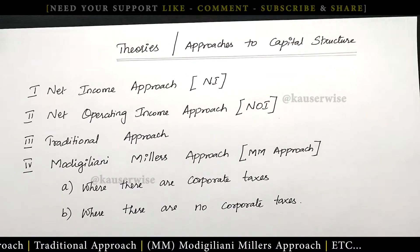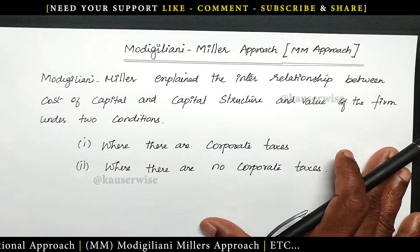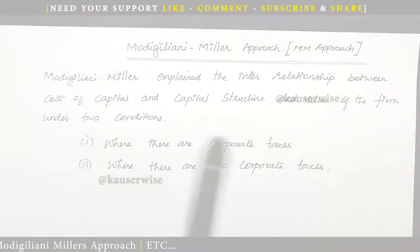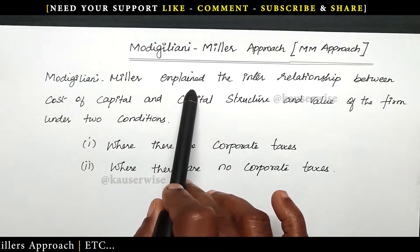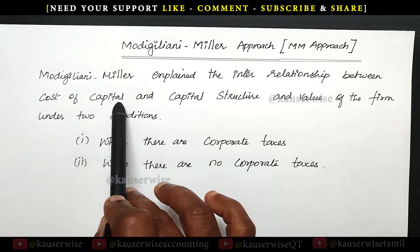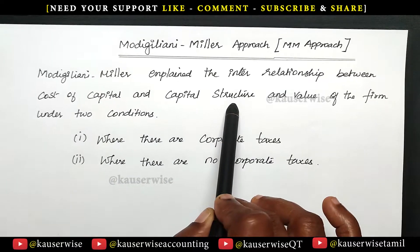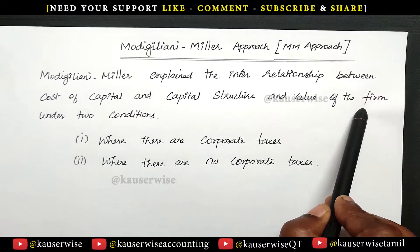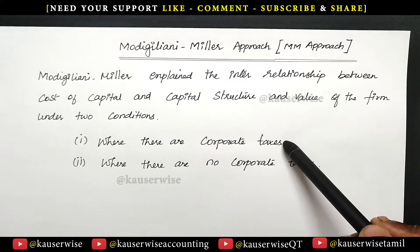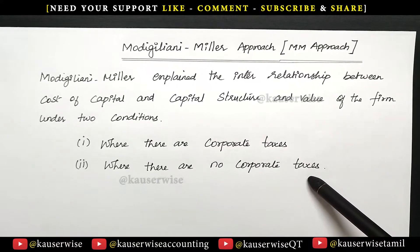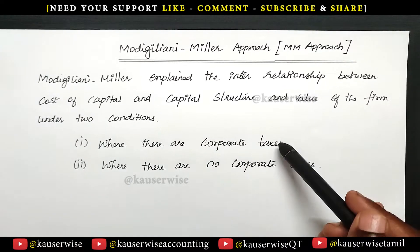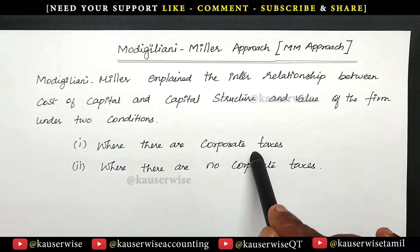Before we see the numerical problem, let us try to understand briefly what is MM approach. Modigliani-Miller explained the interrelationship between cost of capital, capital structure, and value of the firm under two different conditions: one is with corporate tax and the second one without corporate tax. Now let's see the numerical problem for the first one, that is where there are corporate taxes.